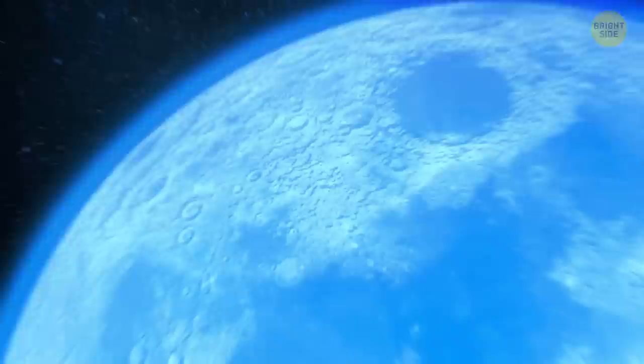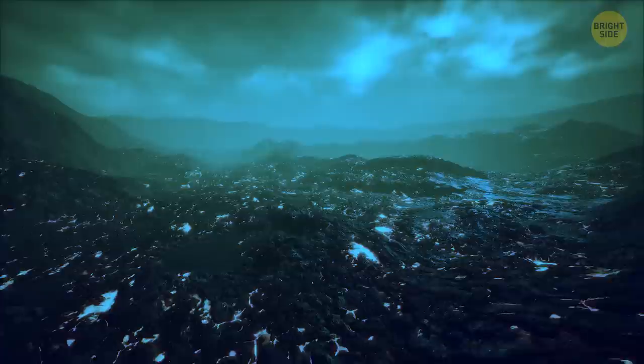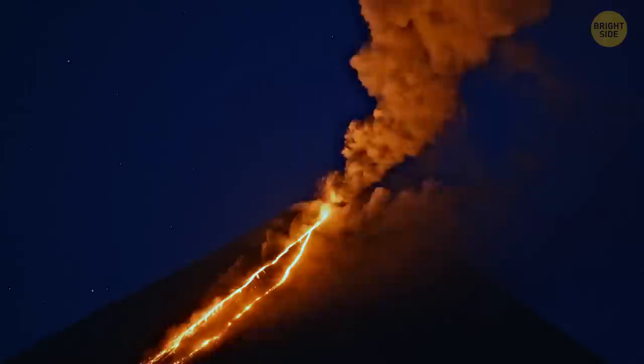It formed at the times when powerful volcanic eruptions were rocking the satellite. Gases spread all over the moon's surface. It happened so fast that they didn't have enough time to escape into space. At that time, the lunar surface was covered with basins filled with volcanic basalt.